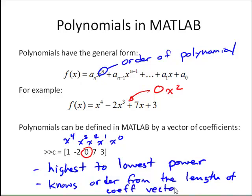Here we have a coefficient vector with five elements. Since that coefficient vector has five elements, MATLAB knows this is defining a fourth order polynomial.